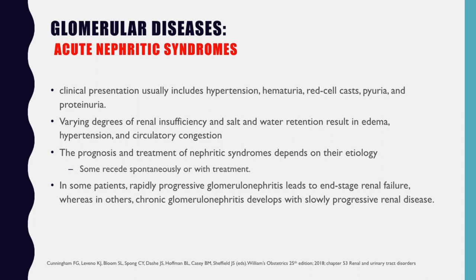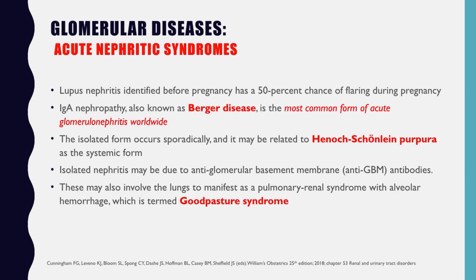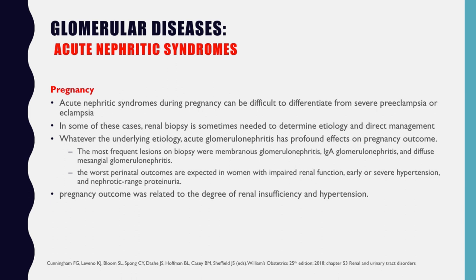Lupus nephritis identified before pregnancy has a 50% chance of flaring during pregnancy. IgA nephropathy, also known as Berger's disease, is the most common form of acute glomerular nephritis worldwide; its isolated form occurs sporadically and may be related to Henoch-Schönlein purpura as a systemic form. Isolated nephritis may be due to anti-glomerular basement membrane (anti-GBM) antibodies, and may also involve the lungs to manifest as pulmonary renal syndrome with alveolar hemorrhage — termed Goodpasture syndrome. During pregnancy, acute nephritic syndromes can be difficult to differentiate from severe preeclampsia or eclampsia, and renal biopsy is sometimes needed.